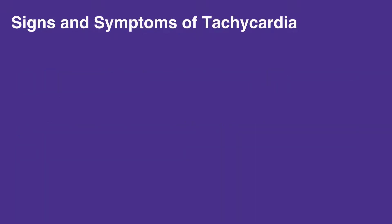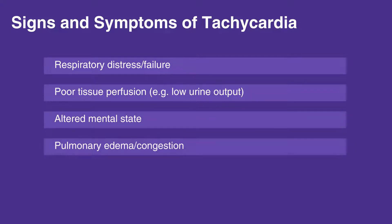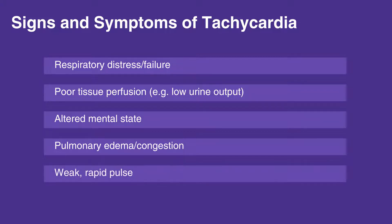Signs and symptoms of tachycardia include respiratory distress or failure, poor tissue perfusion — for example, low urine output — altered mental state, pulmonary edema or congestion, and weak rapid pulse.